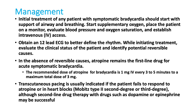Atropine is the first-line treatment for any type of bradycardia. In conditions like complete AV block or second degree AV block it may not work, but atropine is still given first. IV atropine 1 mg is the loading dose and can be repeated up to three times. If the patient does not improve with atropine and has second or third degree AV block, they may require temporary or permanent cardiac pacing — including transcutaneous cardiac pacing.